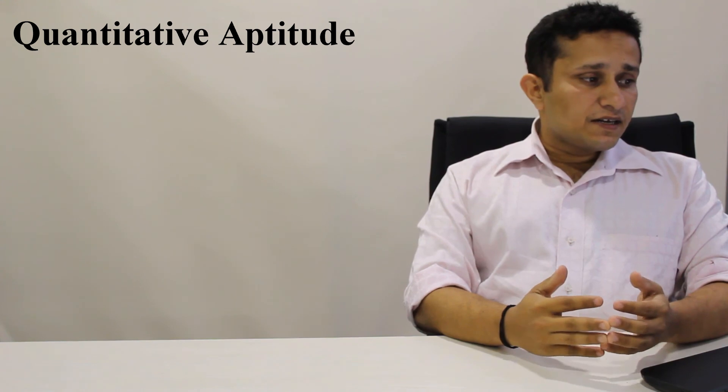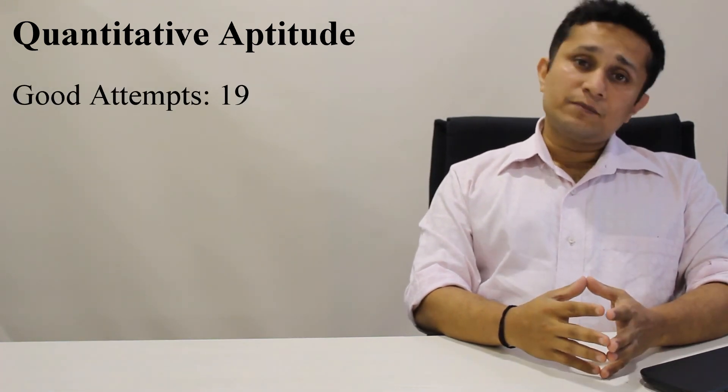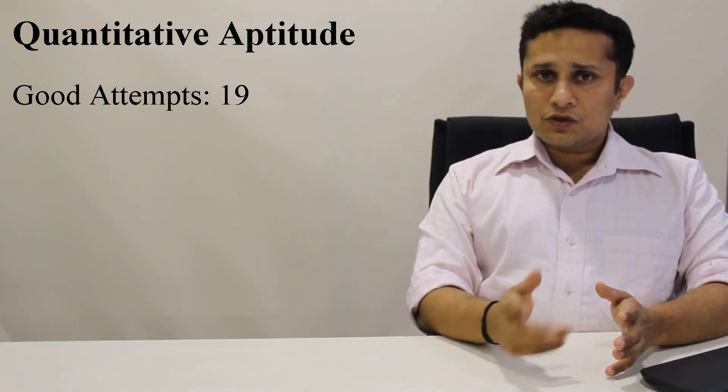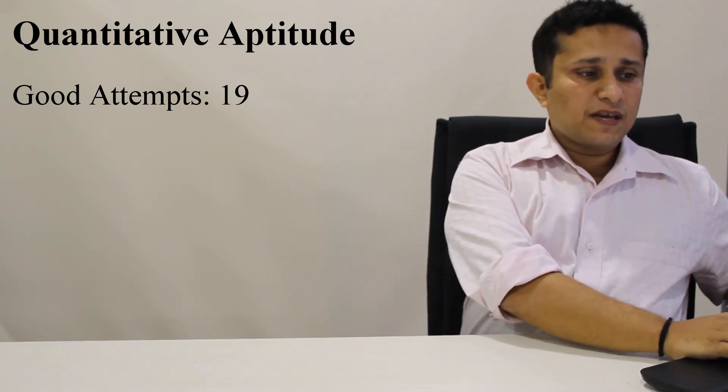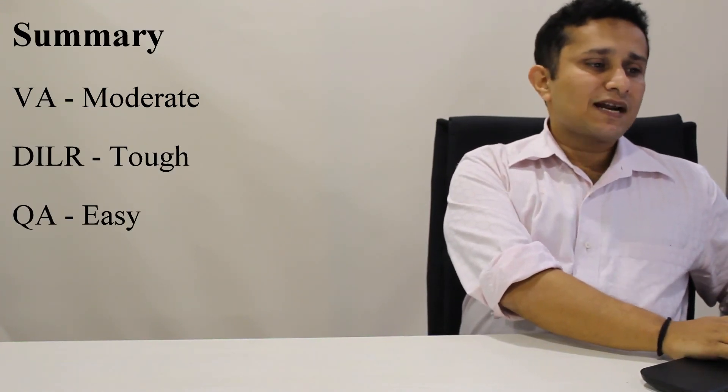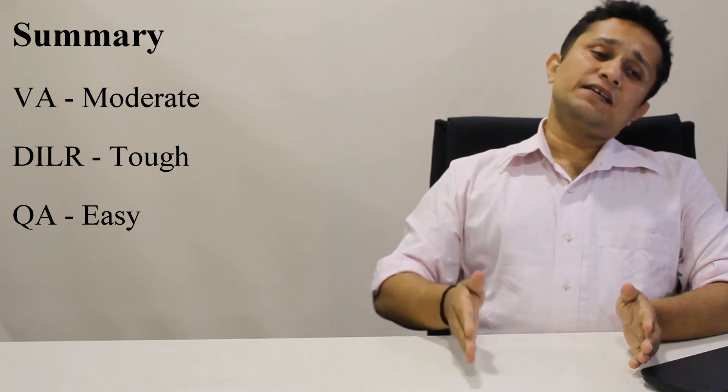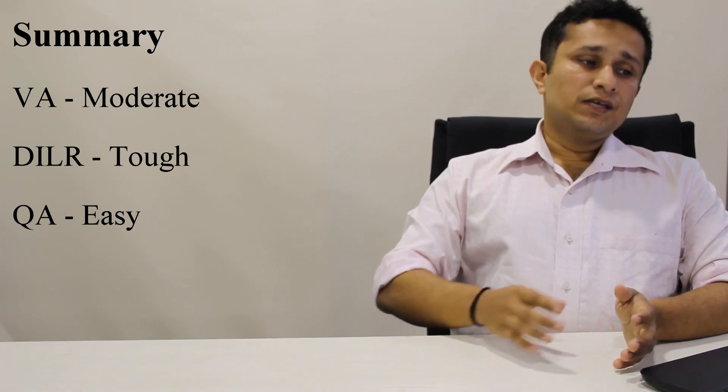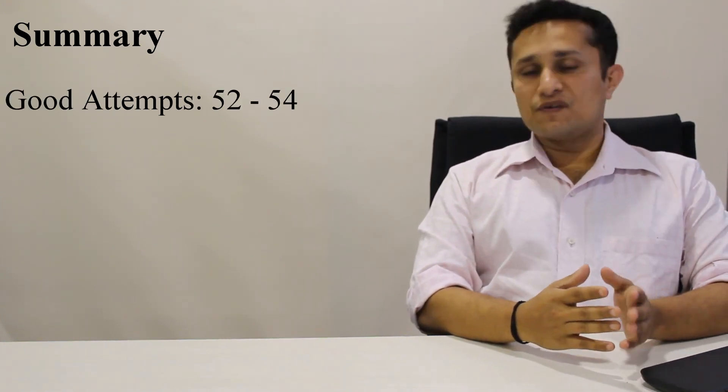Broadly, I could identify close to 15 questions which you should have definitely attempted. If I add 3 to 4 questions more which were on the easier side, you will get 19 attempts. On the whole, this paper was on the lines of the actual CAT with a moderate verbal section, tough DILR section, and easy quant section. Overall, the number of good attempts for this mock would be between 52 and 54.